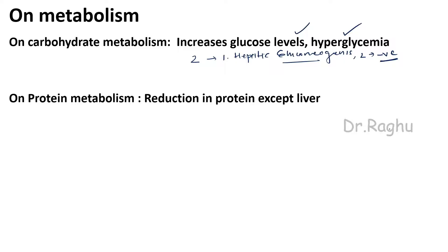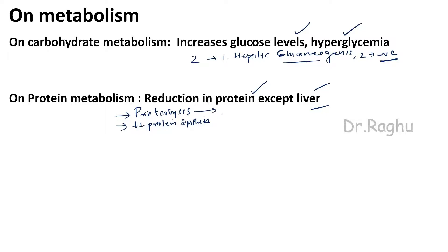Cortisol's action on protein metabolism: cortisol causes reduction in protein in almost all tissues except the liver. This occurs because cortisol causes proteolysis — breakdown of protein — and also decreases protein synthesis. The proteolysis increases production of amino acids, which are transferred to the liver. These amino acids can also be used in the production of glucose by gluconeogenesis.